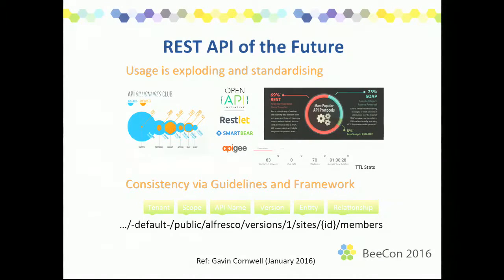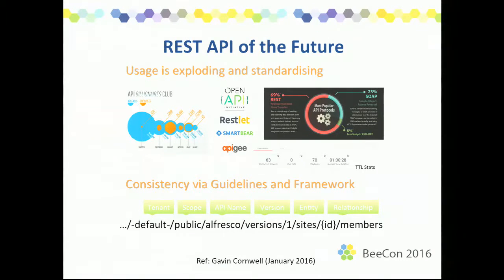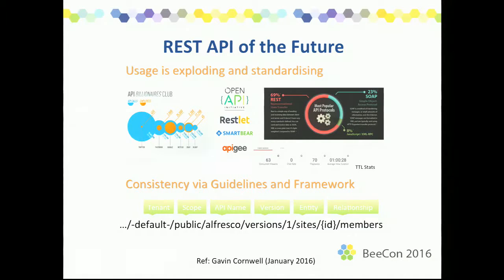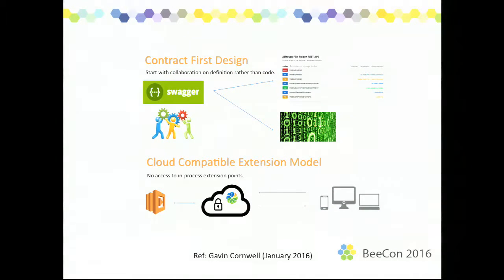The next couple of slides I've borrowed from my colleague Gavin Cornwell — it's a sort of poster infographic around how API usage is exploding and standardizing. What we're trying to do is make APIs a lot more consistent as we move forward, via guidelines, a framework, and a pattern. And as we move forward, we'd like the API to be effectively contract-first design — something we can collaborate on both internally and externally, rather than on the code implementation.